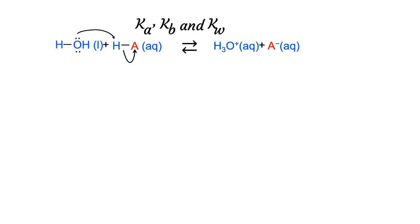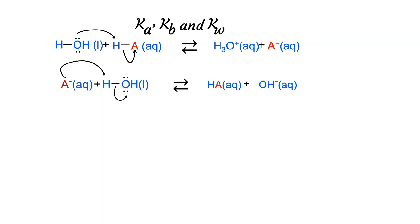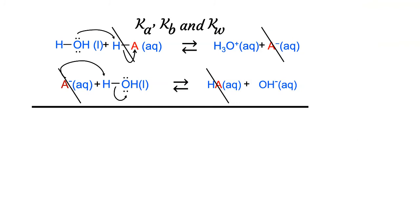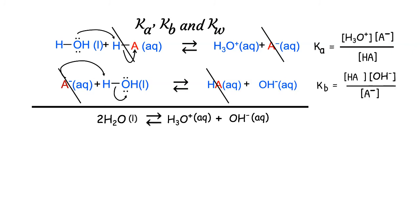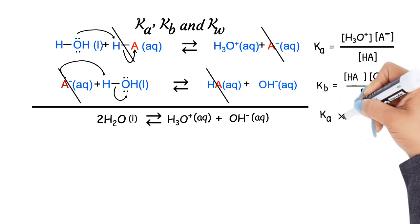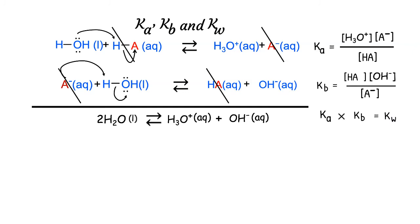Now let's look at the relationship between Ka and Kb for a given acid and its conjugate base. Consider the ionization of a hypothetical acid HA in water to produce an acidic solution, and the reaction of its conjugate base A⁻ with water to produce a basic solution. If we add up these two reactions, both HA and A⁻ appear on both sides and cancel out, leaving the auto-ionization of water. The equilibrium constant for the sum of two reactions is the product of the individual equilibrium constants, so Ka times Kb gives Kw.